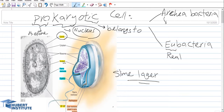Based on the structure of the prokaryotic cell, the outer layer is called the capsule. The capsule is a sticky and thick structure on the outer layer of the prokaryotic cell, responsible for protection. By the presence of the capsule, prokaryotic cells are also able to escape from the immune system of our body, so it plays an important role in the pathogenesis of prokaryotic cells.